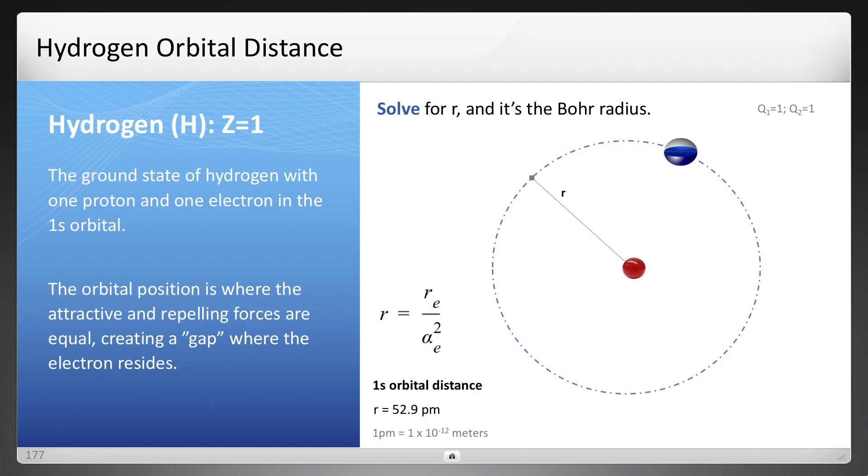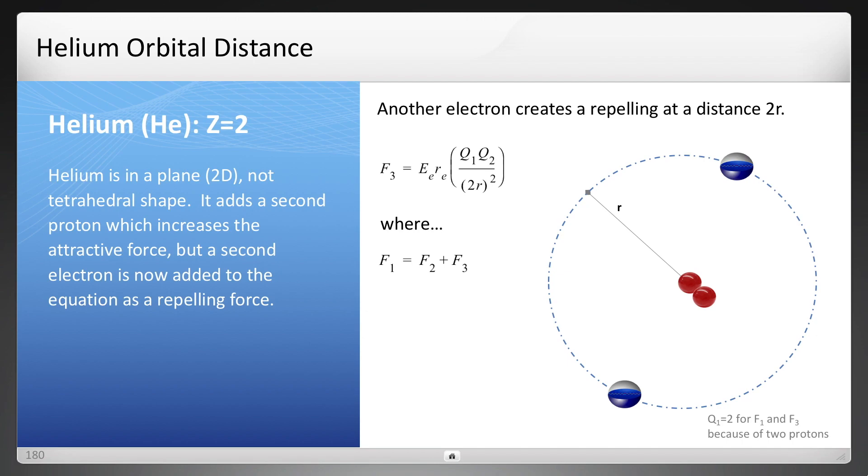So here's Bohr radius, which is 52.9 picometers, and the same method can be used for helium.